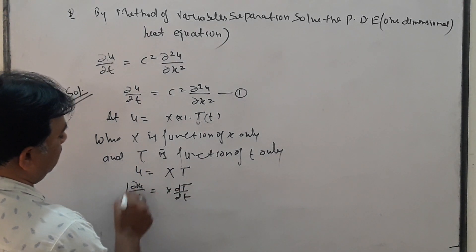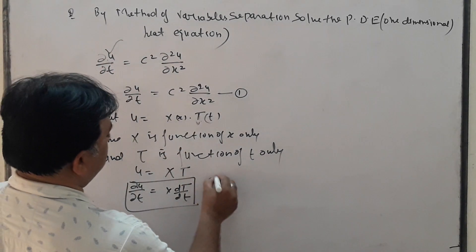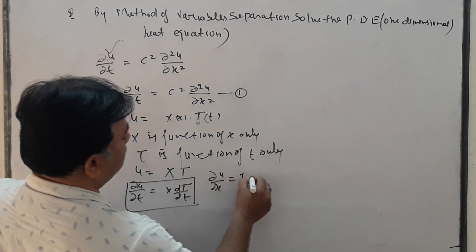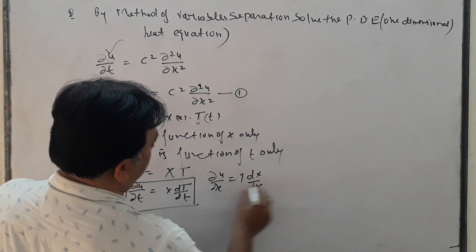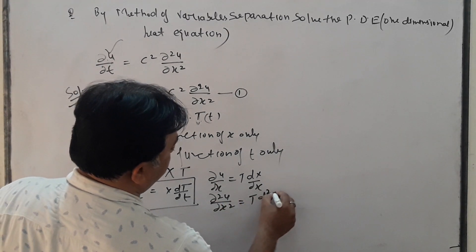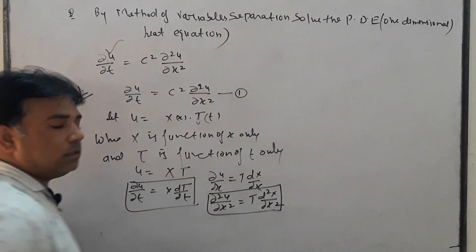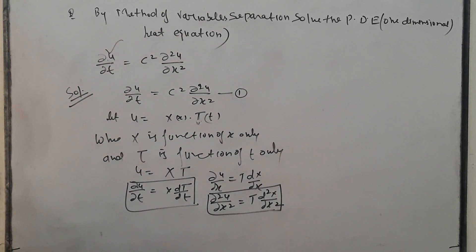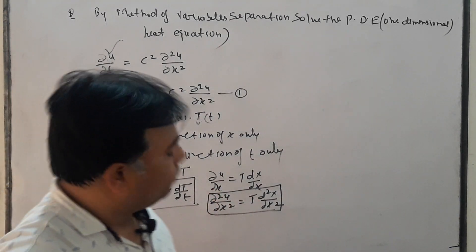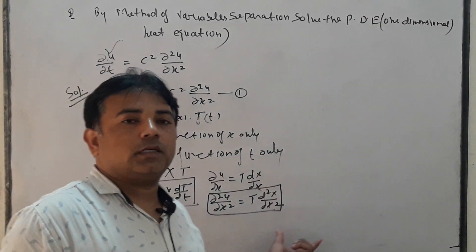Again, ∂u/∂x = T · dX/dx, and ∂²u/∂x² = T · d²X/dx². This is the same process as in the previous wave equation lecture. If you haven't seen that video, I again request you to watch the previous video first for better understanding.